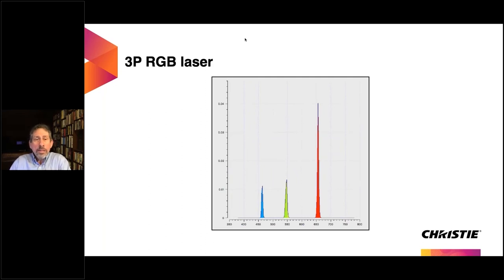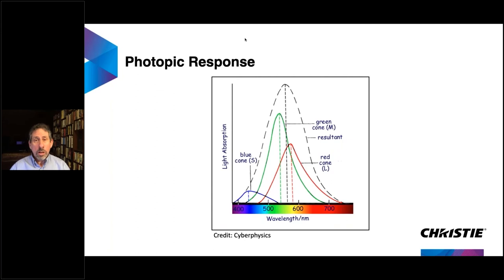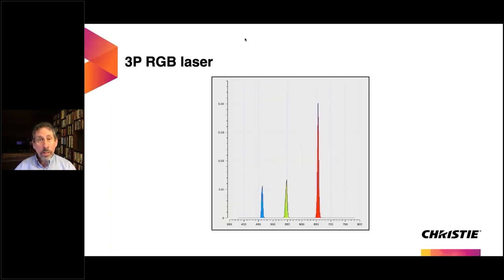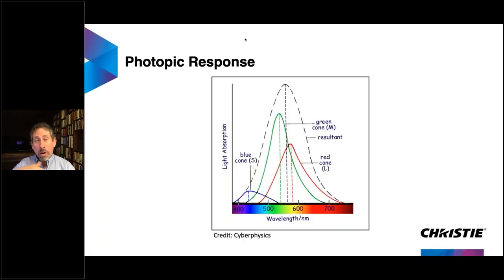Looking at our RGB 3P laser system: there are distinct red, green, and blue spikes — each is the actual spectrum of the laser. The red is much taller because it sits far up in the spectrum, and referring back to the photopic response chart, sensitivity decreases above 700nm. To produce balanced white light, you need equal perceived amounts of red, green, and blue, which means adding much more red energy. Even though we can't fully see it, there's still a lot more energy entering the projector.